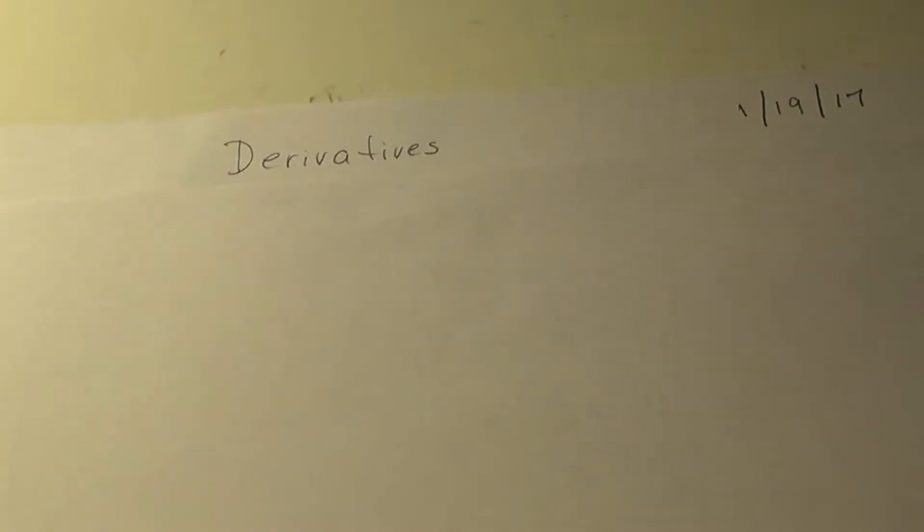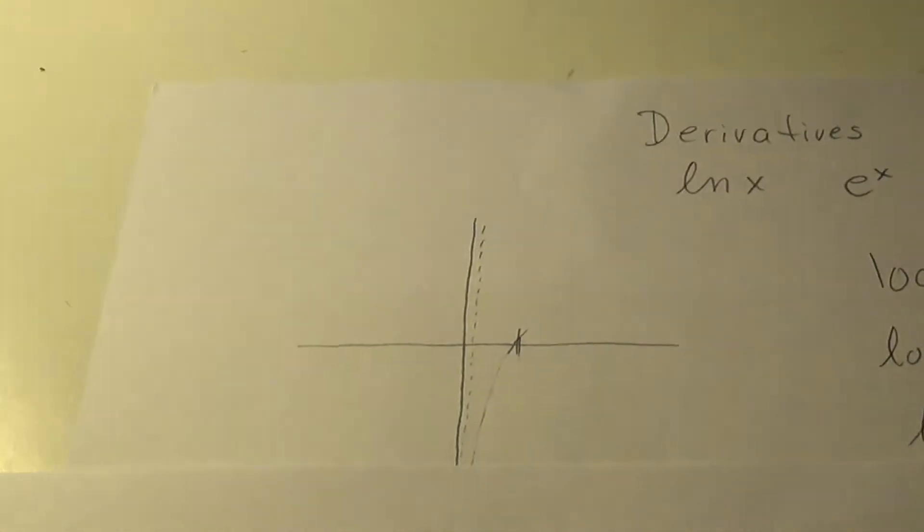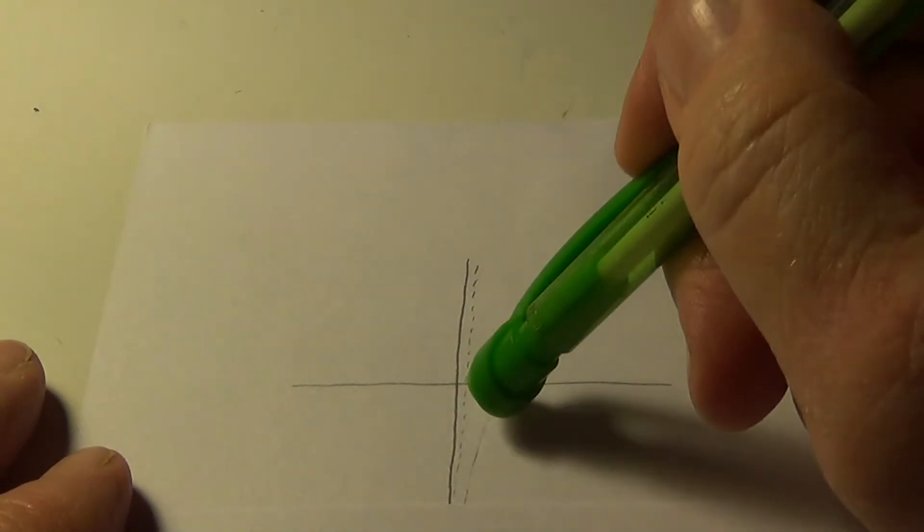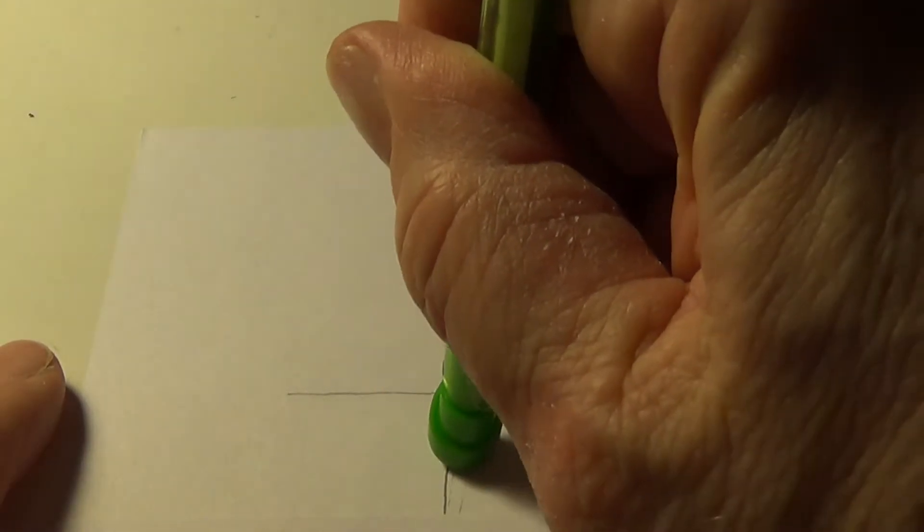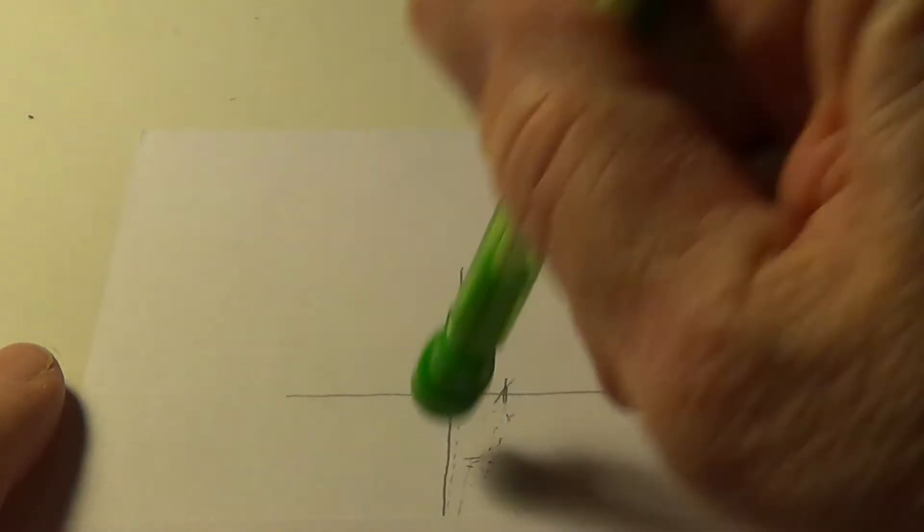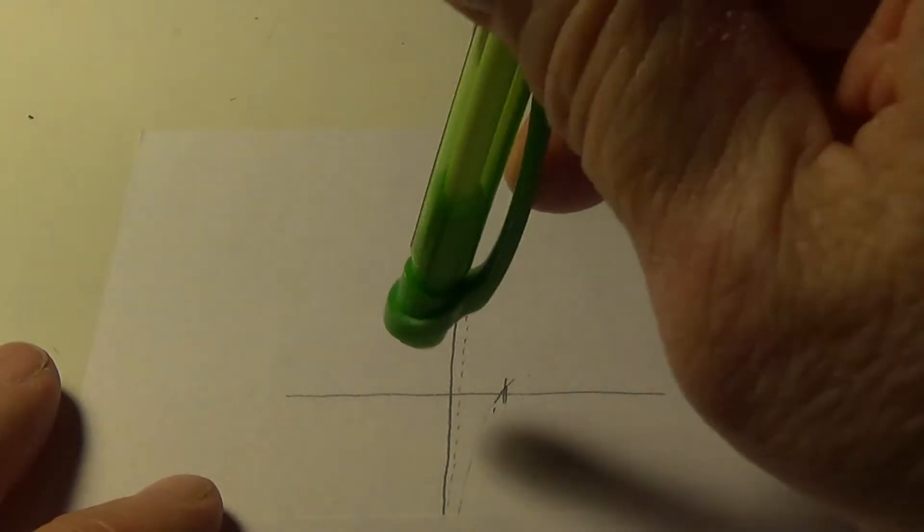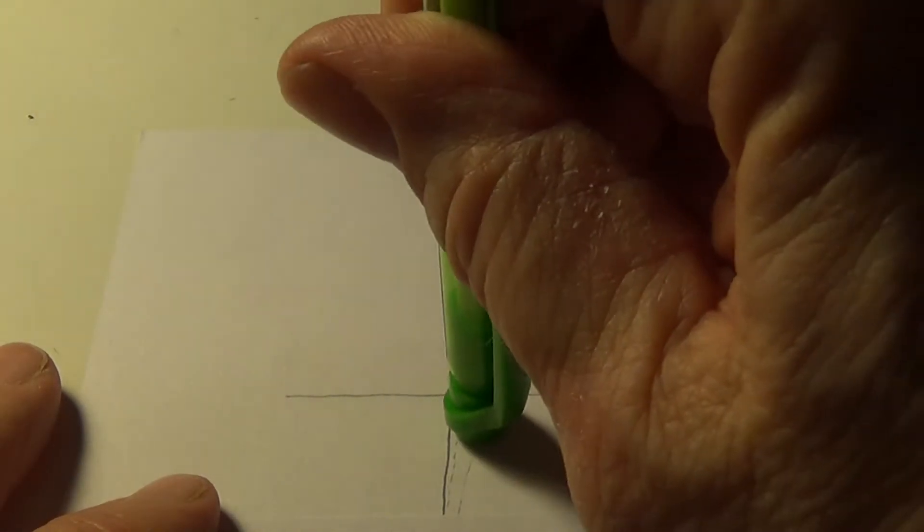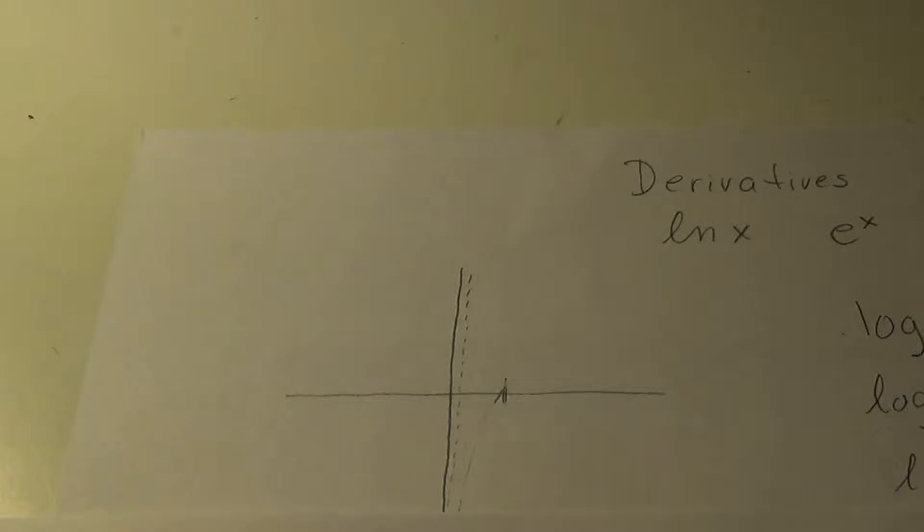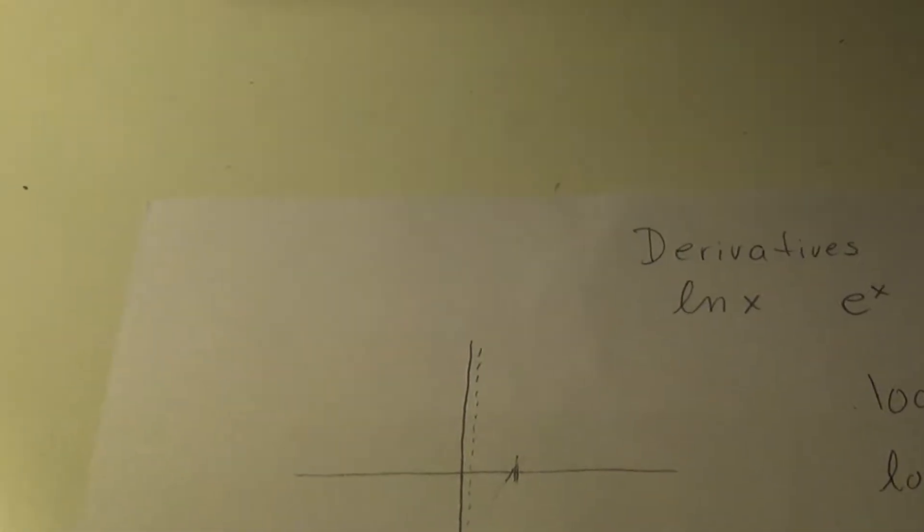Alright, the two new derivatives that we need to learn today are the ln of x. What is the derivative of that? And e to the x. What is the derivative of that? So, first of all, I'm going to start a sketch here and pretend you can't see that. Didn't erase very well. But I didn't want to just give it away.